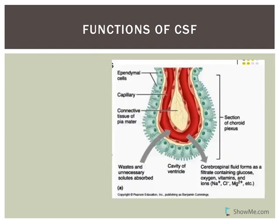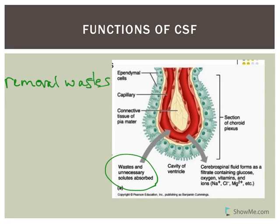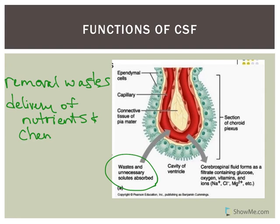CSF also helps remove waste products and serves as a transport medium for delivery of nutrients and various chemical signals. It ensures a constant ionic environment for nervous tissue, keeping it stable and nutritive. The composition of CSF — including protein and glucose concentrations — is different from that of blood.